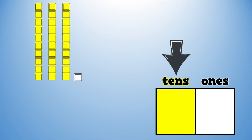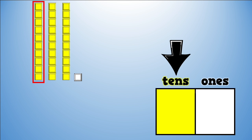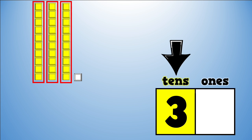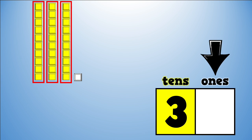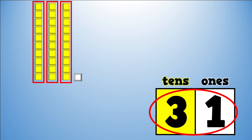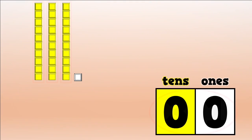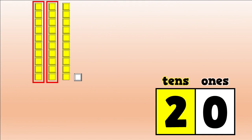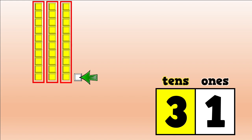Next number. How many groups of ten are there? Count the towers of ten: one, two, three. Three groups of ten. How many extra ones? One extra one. What number did we make? Thirty-one. Skip count and count on to see if we get thirty-one: ten, twenty, thirty, thirty-one. Stellar job!